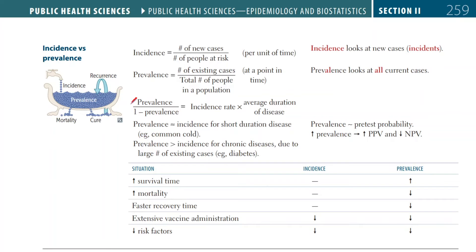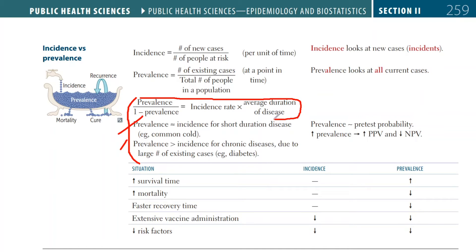Let's talk about these three points, which are all linked together. If you understand this formula, you can link prevalence and incidence. A quick warning: you're not really supposed to use this formula to calculate anything — you're just supposed to use it to understand the relationships that exist within it.